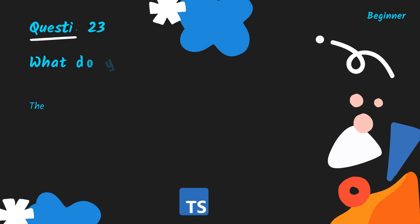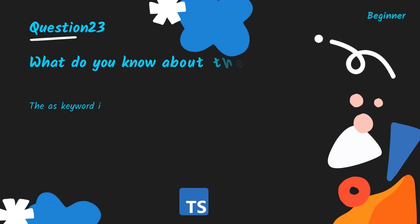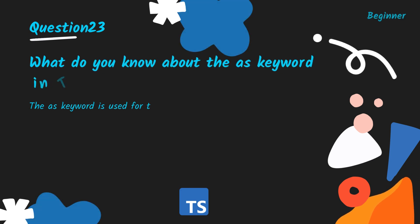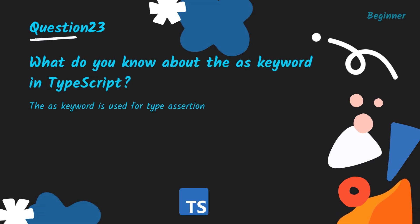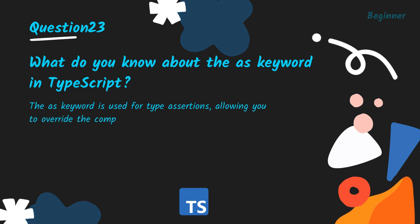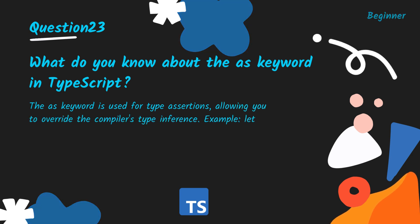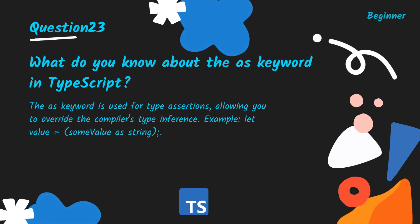What do you know about the as keyword in TypeScript? The as keyword is used for type assertions, allowing you to override the compiler's type inference. Example: let value = someValue as string.